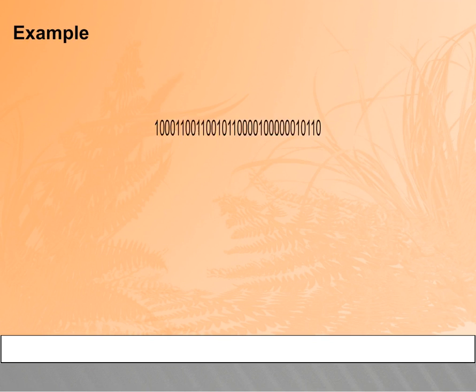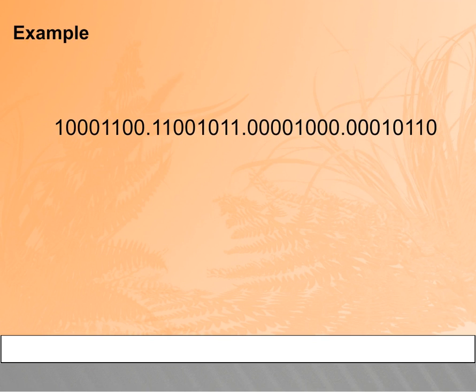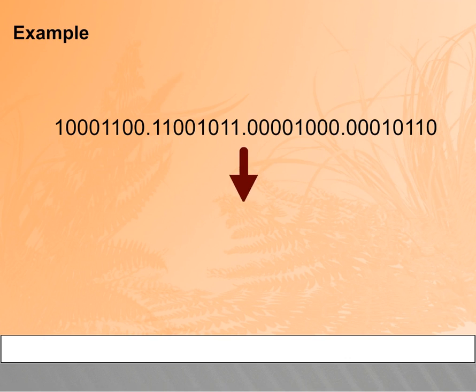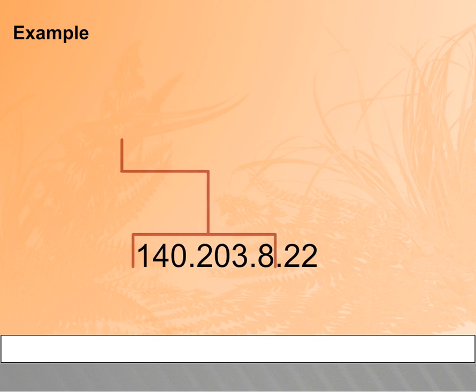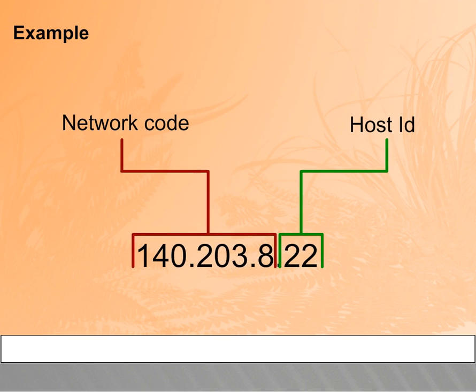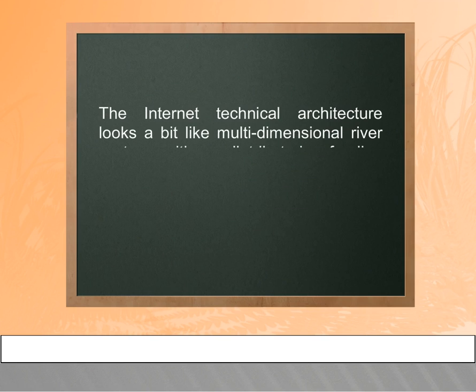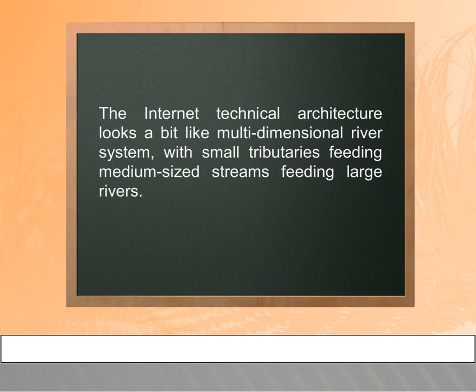The internet technical architecture looks a bit like a multi-dimensional river system, with small tributaries feeding medium-sized streams feeding large rivers.